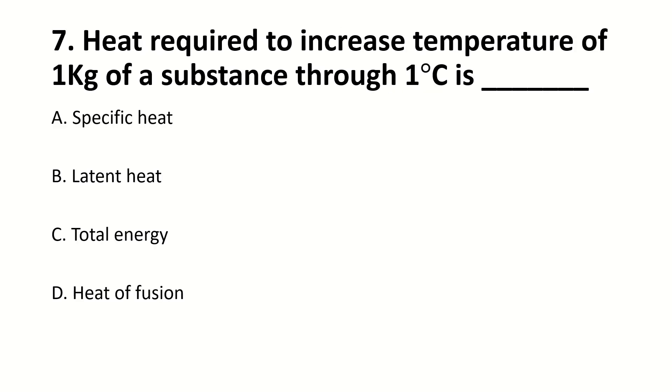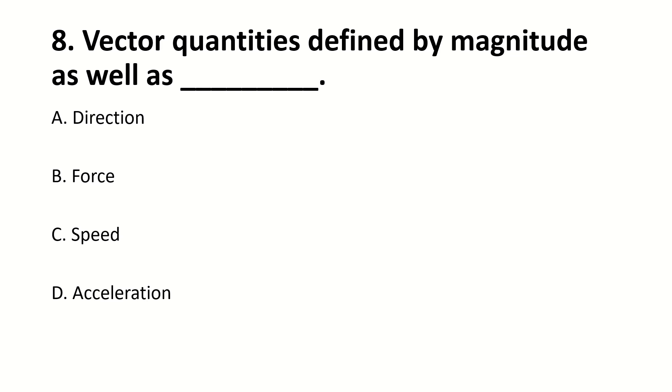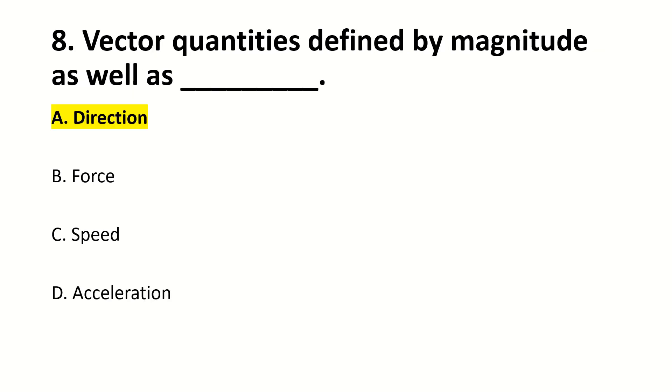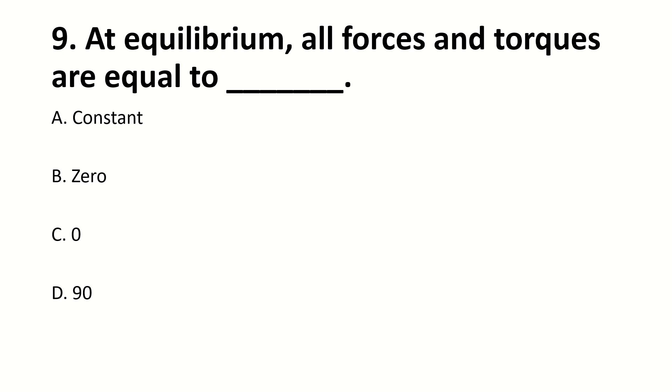Heat required to increase temperature of one kg of a substance through one degree celsius. Right answer is specific heat or specific heat capacity. Vector quantity is defined by magnitude as well as dash. Right answer is direction. Vectors dot product R equal to dash, so right answer is zero.